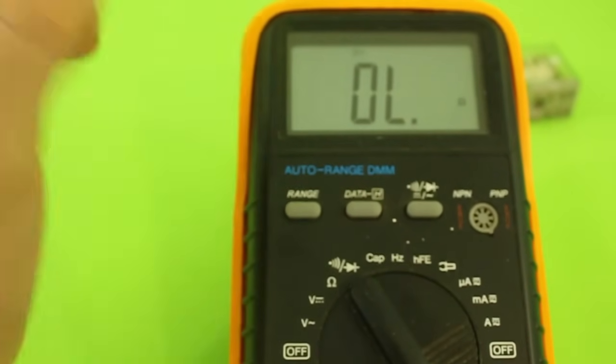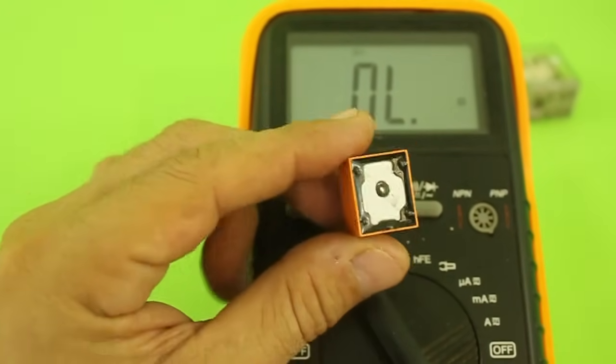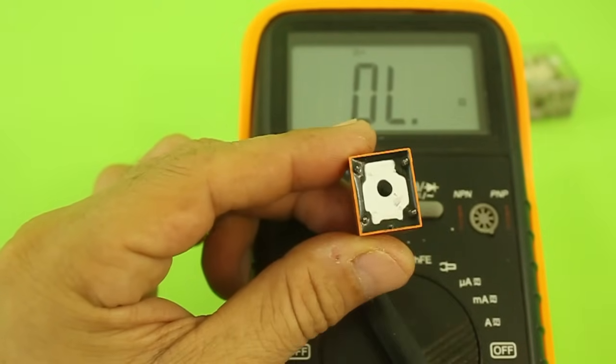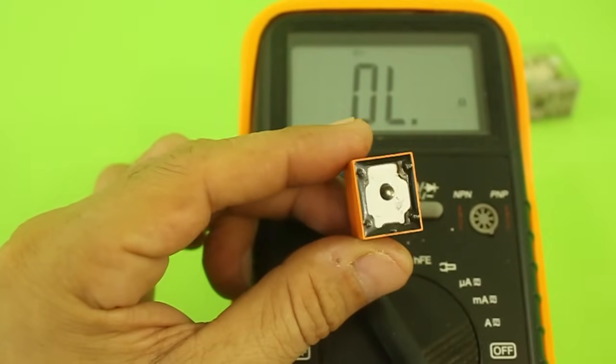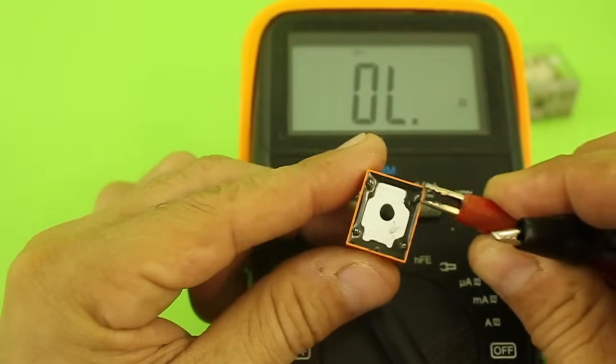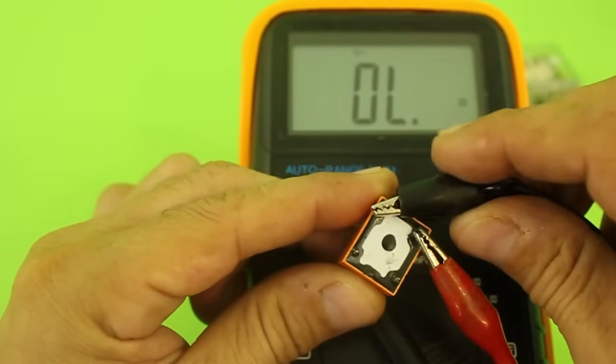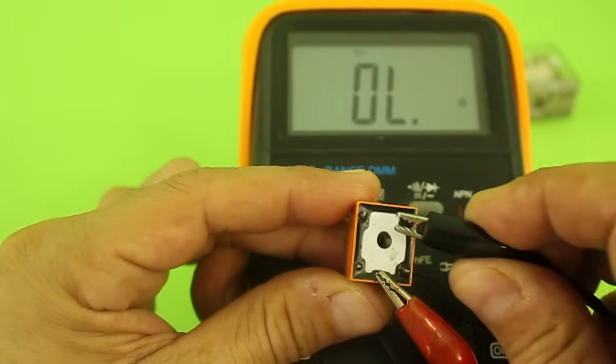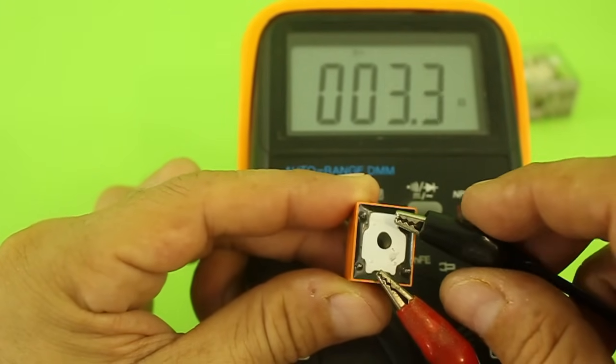Well, let's check the pins of our relay with the multimeter to check continuity. Remember that these two are the coil contacts, so we have these three pins to identify. Let's check a pair to see if we have continuity. Here we do not have, let's see this other pair.